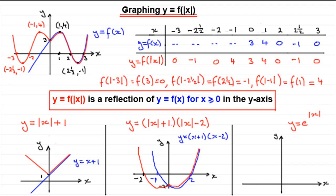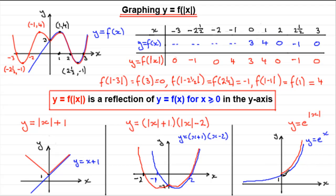For y equals e to the mod of x, we first consider y equals e to the x — no mod. This graph passes through 1 on the y-axis and shoots up, and as x tends to minus infinity the curve approaches the x-axis from above without crossing it. To sketch y equals e to the mod x, take this part of the graph for x greater than or equal to 0 and reflect it in the y-axis. You get a curve that comes to a point at the y-axis. I hope that's given you some idea on how to sketch graphs of the form y equals f of mod x.